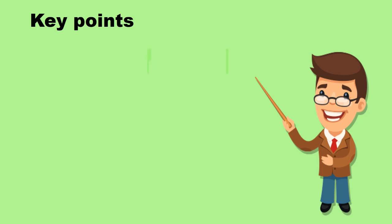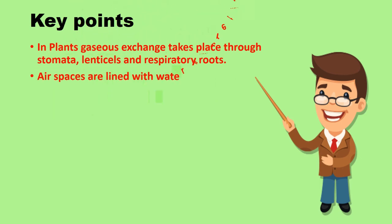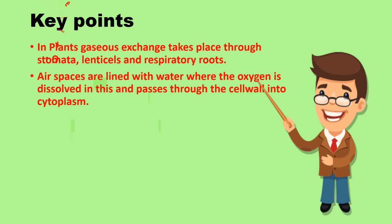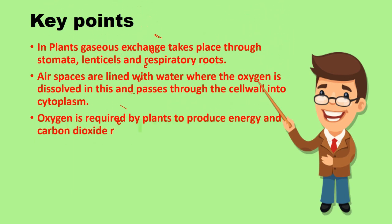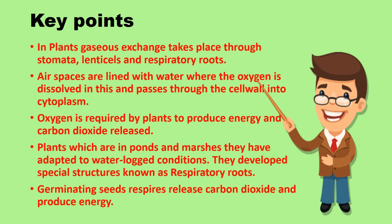Key points: in plants, gaseous exchange takes place through stomata, lenticels, and respiratory roots. Air spaces are lined with water where oxygen is dissolved and passes through the cell wall into the cytoplasm. Oxygen is required by plants to produce energy and carbon dioxide is released. Plants which are in ponds and marshes are adapted to waterlogged conditions and develop special structures known as respiratory roots. Germinating seeds respire, releasing carbon dioxide and producing energy.